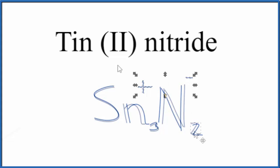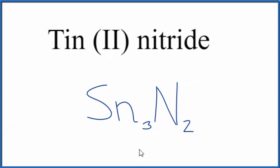Let's get rid of these symbols. And the formula for tin(II) nitride is Sn3N2.